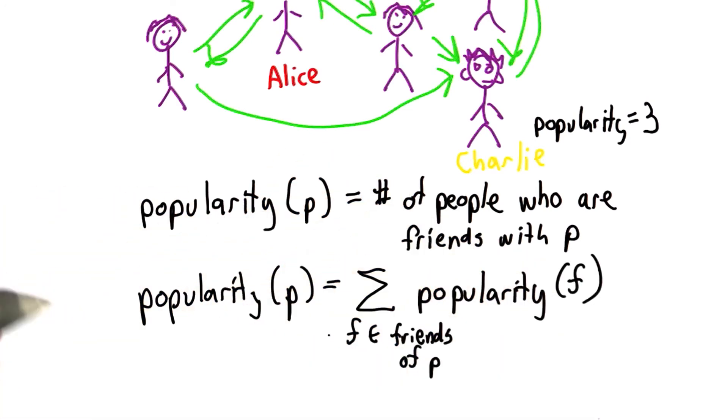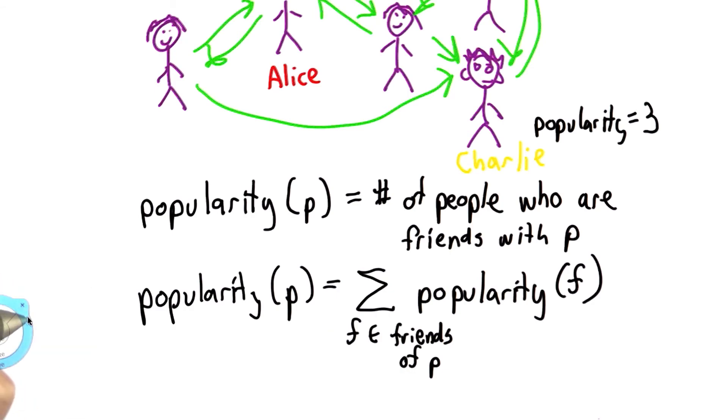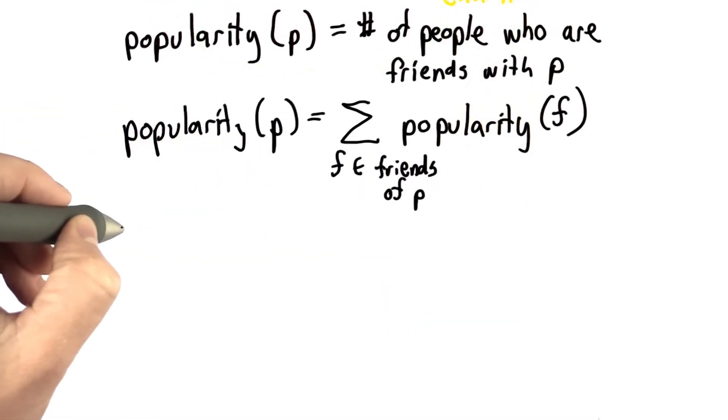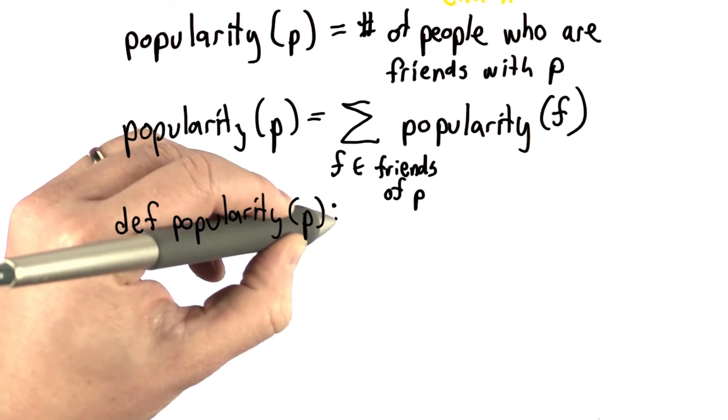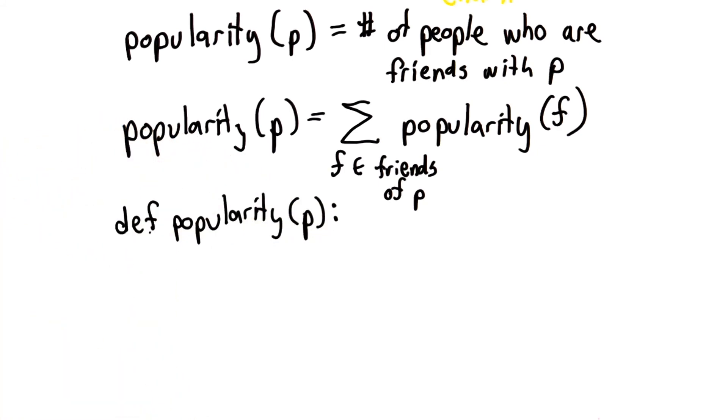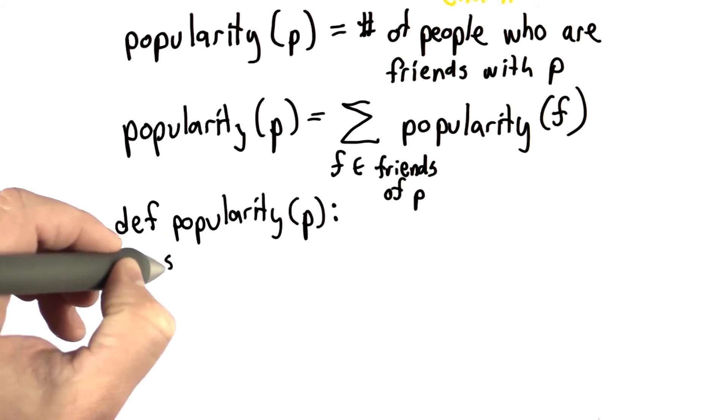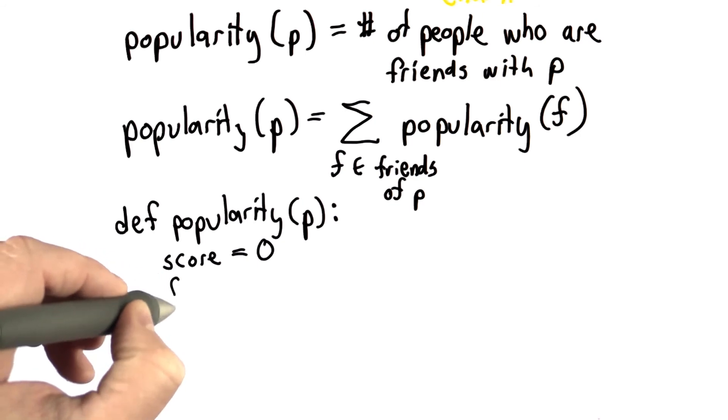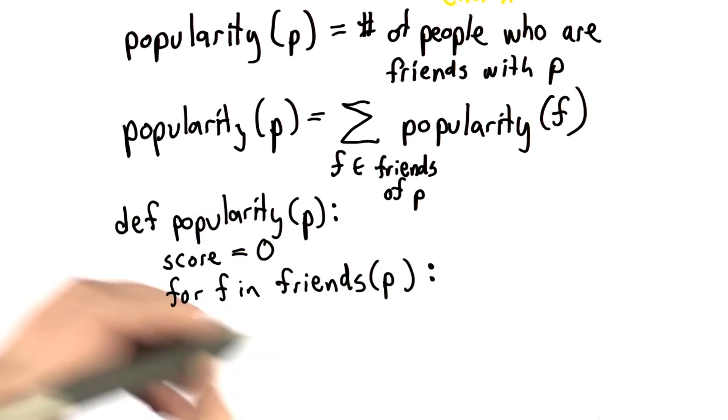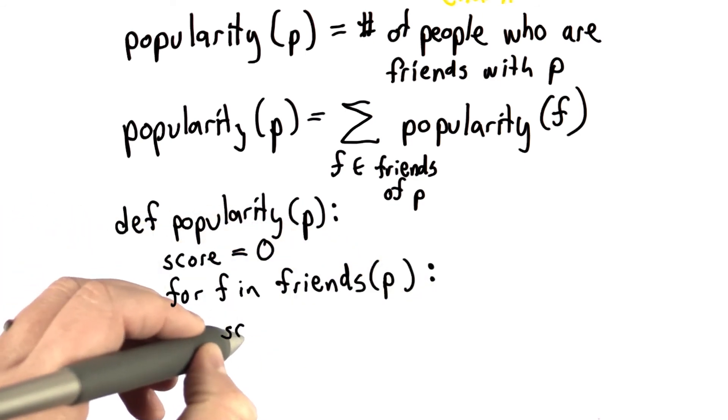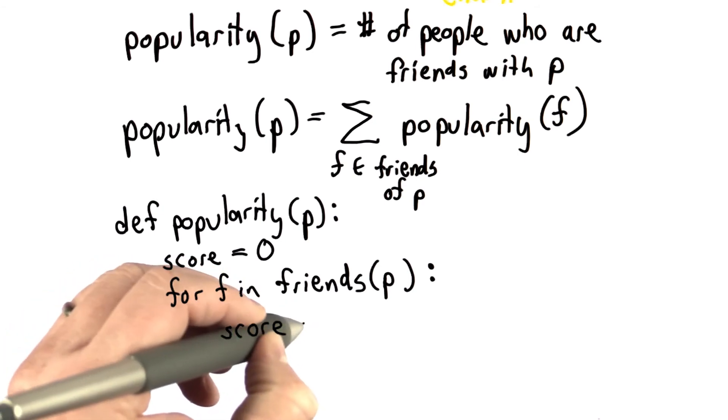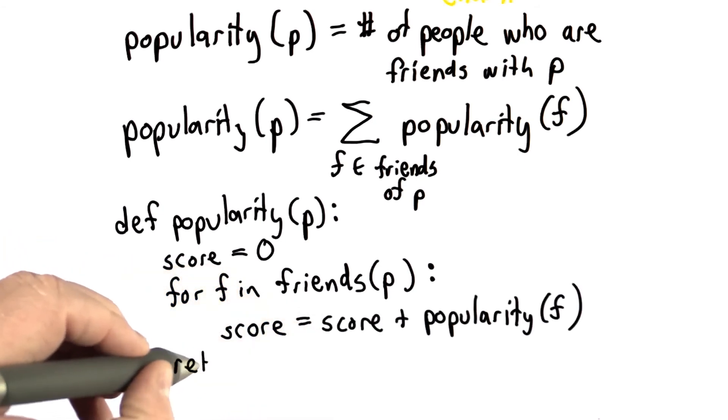If the mathematical notation is unfamiliar to you, we could also write this as pseudo Python code. We're thinking of the popularity of a person P. Let's assume we have a function that gives us the friends. So we're going to start with the score as 0. We're going to loop through the friends. And for each friend, we're going to add to P's score the popularity score of the friend. And we'll return the score as the result.